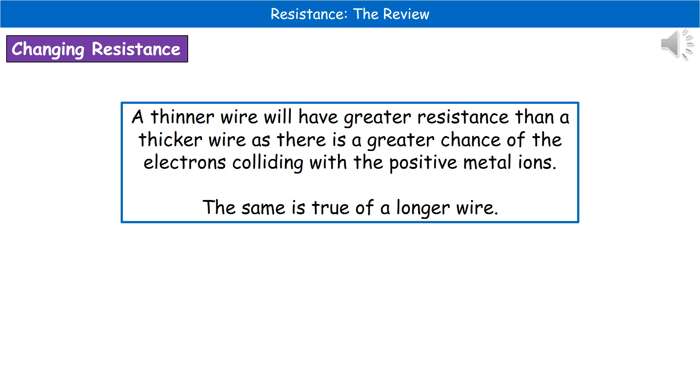A couple of points we should remember about what can affect the resistance within our circuit. We're going to focus on the wire at this point. If we actually had a thinner wire, then that has a much greater resistance than a thicker wire. The reason for that is there's just a much greater chance of those electrons colliding with the positive metal ions when the wire is much thinner.